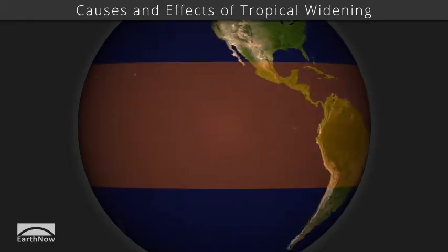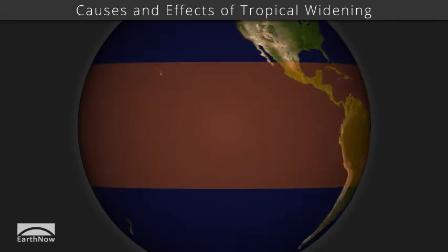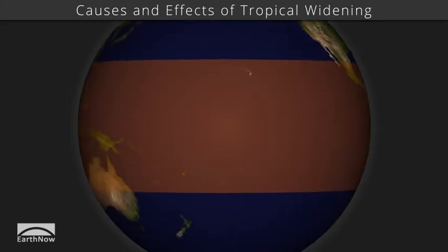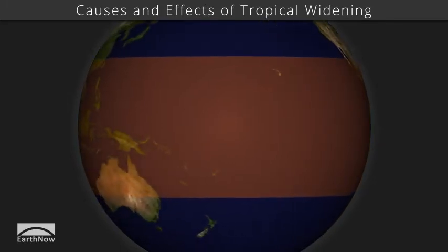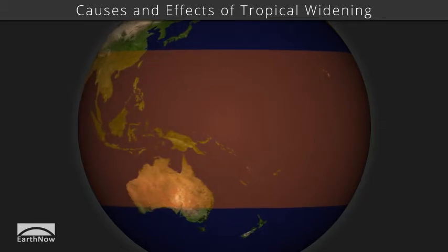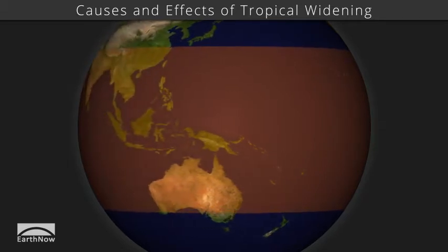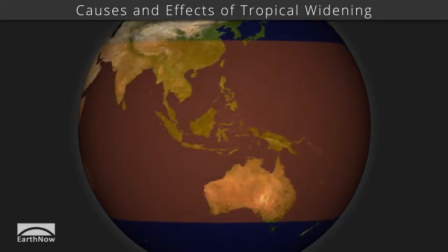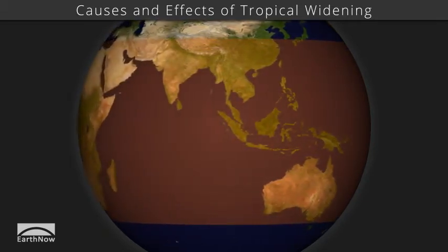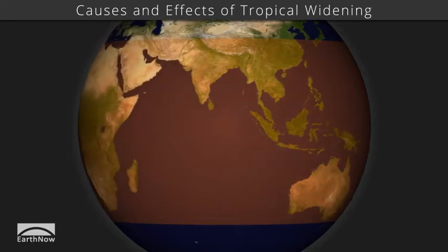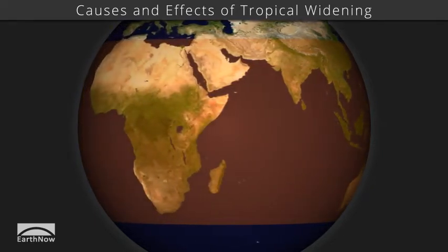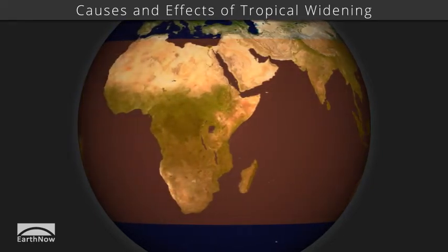Here, the tropics is highlighted in orange. Recent studies show the tropical zone is expanding towards the poles. This widening spreads tropical diseases to new places and drought to the subtropics, where much of the world's population lives.